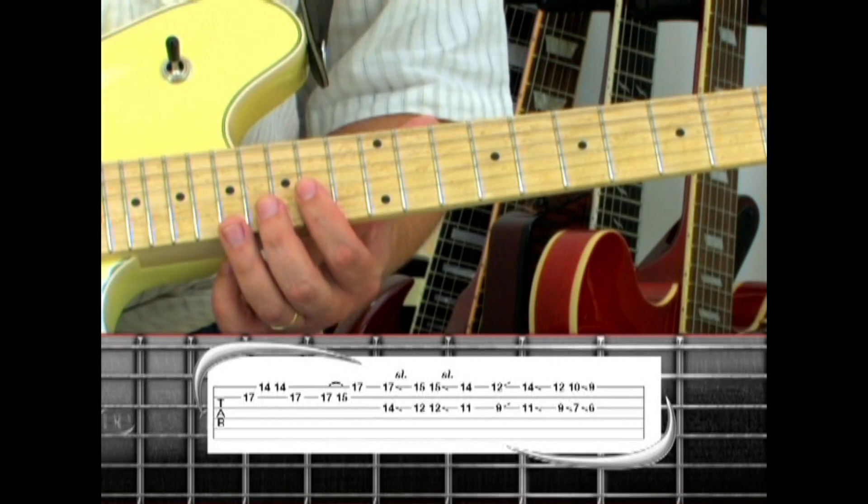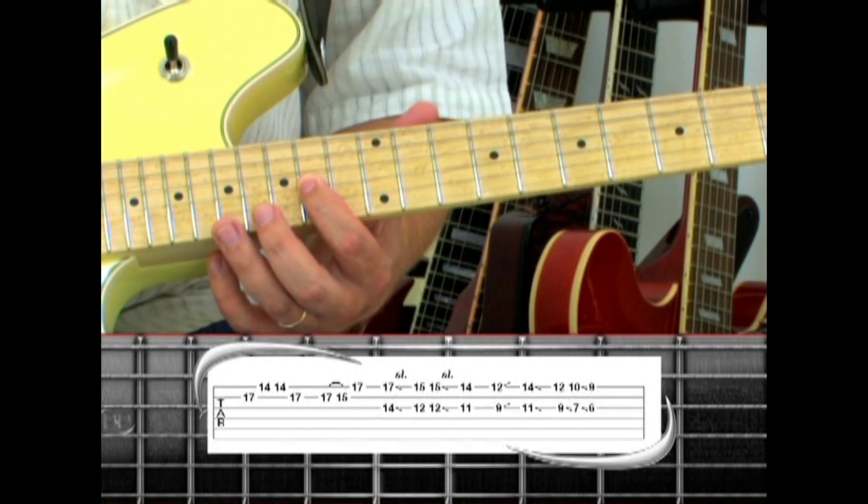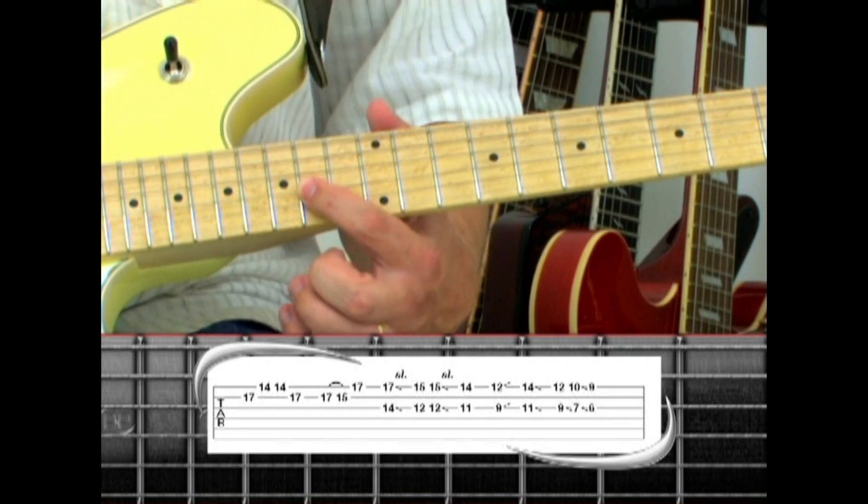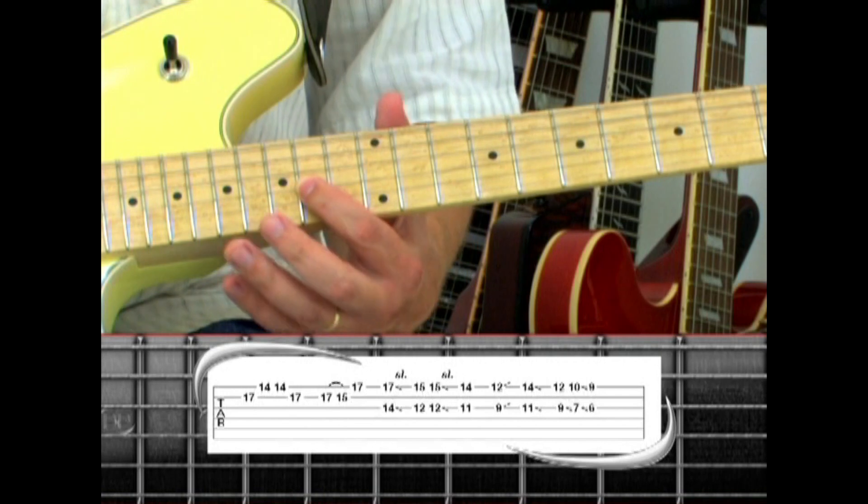Next is a series of octaves. Play the 3rd string 14 with the index finger, along with the 1st string 17 with the ring finger. The bottom of the index finger should lightly touch the 2nd string to prevent stray notes from ringing out.